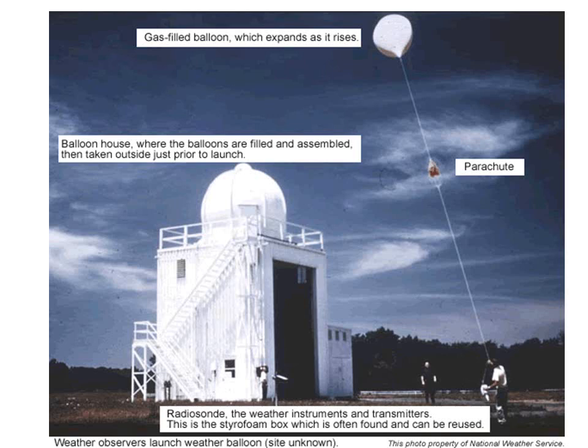Every day, twice a day, the National Weather Service takes upper air observations at 92 stations, using a weather balloon that carries a radiosonde, which is a box that contains weather instruments and data transmitters.